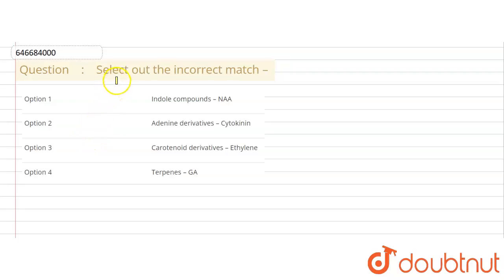Hello everyone. In this question, we are asked to select the incorrect match. Here, derivatives of compounds are given along with plant hormones.